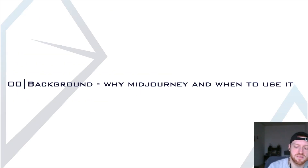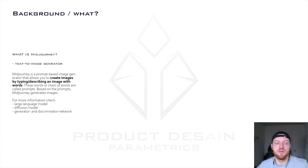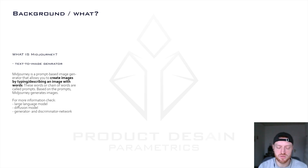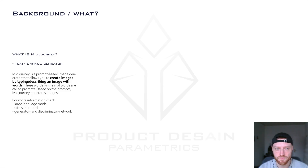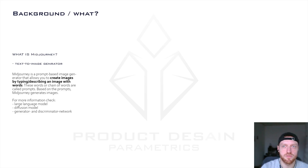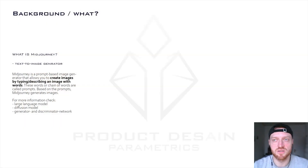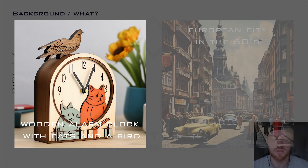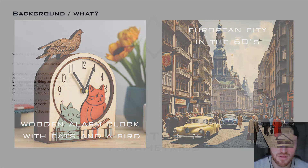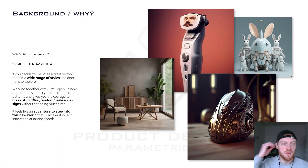Let's start with the background: what is Midjourney? Midjourney is a text-to-image generator, which means you can use natural language words to describe an image and Midjourney's AI networks will translate those words and turn them into an image. You can really use natural language to create images of very abstract topics like feelings — you can just write 'hate,' 'love,' and 'friendship' — or be very specific about objects, living spaces, architecture, whatever. There's no limit except your vocabulary.